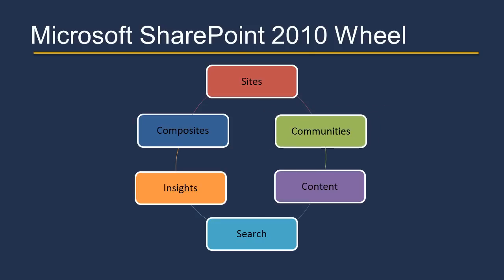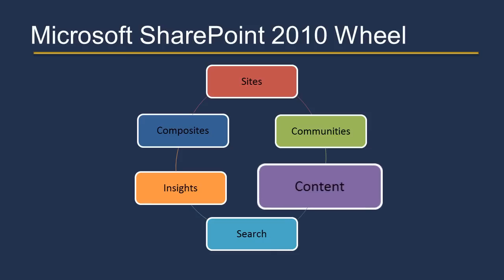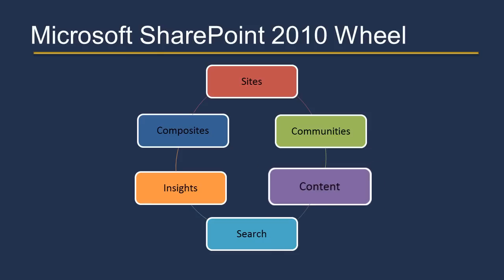Communities is a location for communication — special collaborative sites where people are working together on common goals. Content is for document and record management. This is where documents are managed, stored, updated, and collaborated upon.